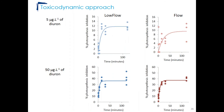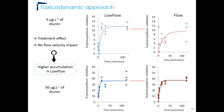For the toxicodynamic approach, photosynthetic inhibition as a percentage of control is shown as a function of time. There is a treatment effect, but no impact of flow velocity. Biofilms exposed to 5 micrograms per liter of diuron show photosynthetic inhibition around 11%, and those exposed to the highest concentration show inhibition around 40%. This is unexpected because higher accumulation was observed under low flow compared to high flow.